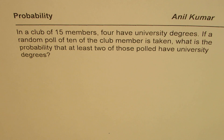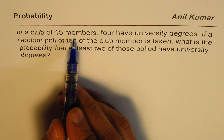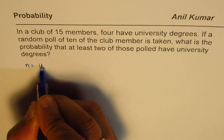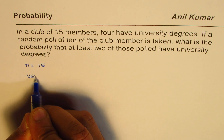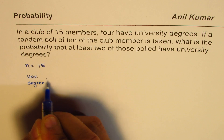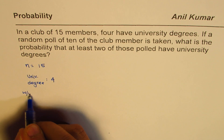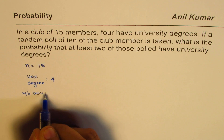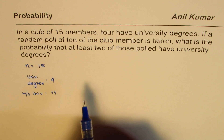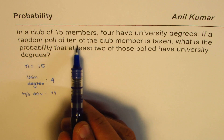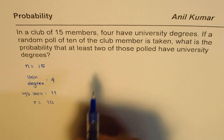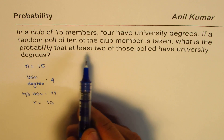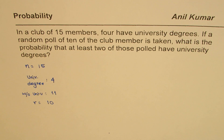So at least two have university degrees — that is what the question is asking. In a club we have 15 members, so the total number of members is 15, meaning N equals 15. Four have university degrees, so without a university degree we have 11. If a random poll of 10 of the club members is taken, so R, the value we are selecting, is 10.